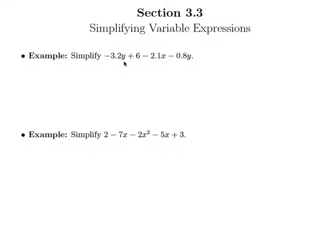Notice I've got negative 3.2y and this 0.8y. They have the same variable and they're raised to the same power, so they're like terms. And then we have 6 and minus 2.1x, but neither of these are like terms with each other and they're certainly not alike with the two y terms.